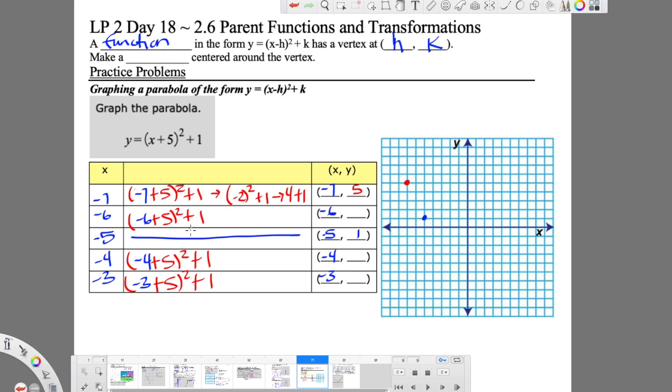And now I'm going to do the same thing with this next one. So I have negative 6 plus 5. That's negative 1 squared plus 1. So negative 1 squared is 1, plus 1 is 2. So if I go to negative 6, I'm going to go up 2, and I'm going to put a point there.